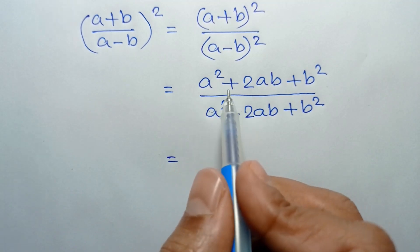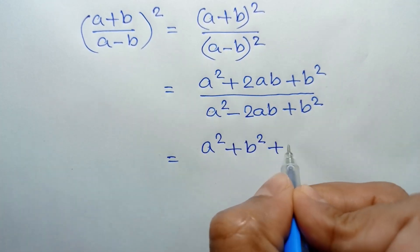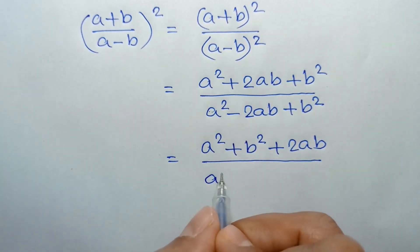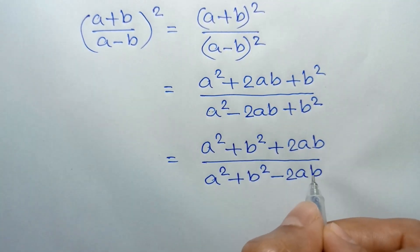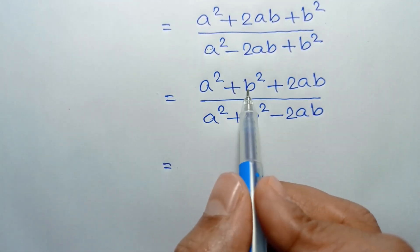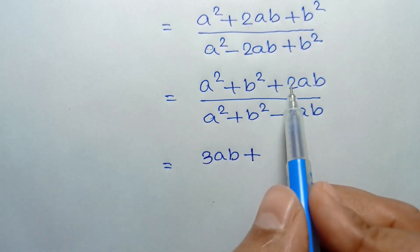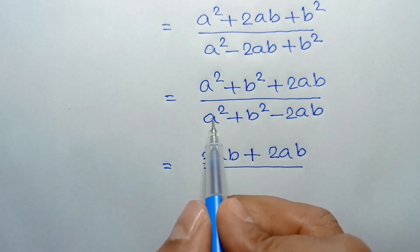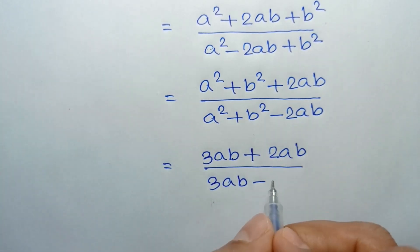Rearranging, this equals (a²+b²+2ab) over (a²+b²-2ab). Now substituting the value a²+b² = 3ab, the numerator becomes 3ab+2ab and the denominator becomes 3ab-2ab.